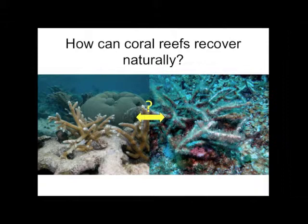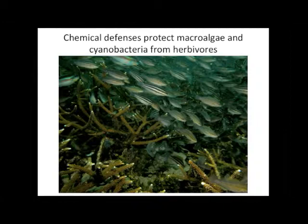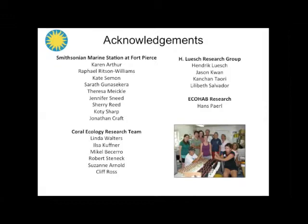To sum up with a couple of take-home messages: we know that chemical defenses protect macroalgae and cyanobacteria from herbivores, but there's a lot of species specificity to this — some chemically rich species may be very effectively defended, others not so. There are a lot of differences in terms of different herbivores and how they respond to these compounds. We also know that coral-algal competition occurs at all life history stages, not only for adults but also for larvae. Based on our early data, it's these early life history stages that are really the most vulnerable to coral-algal interactions. This work really takes a large team of people over five or six years, as you only get a few days a year to do the larval experiments.